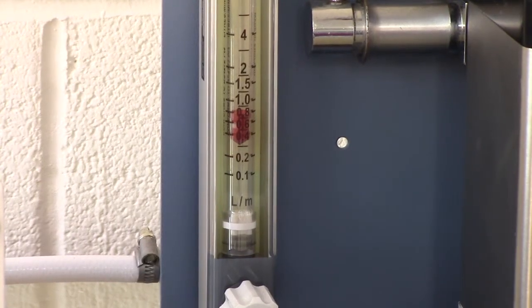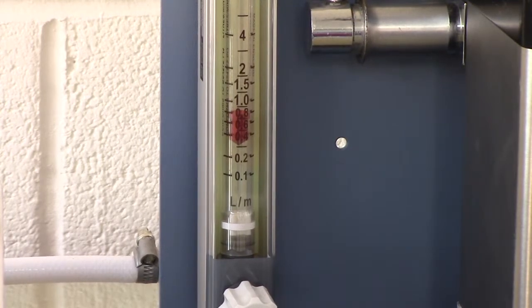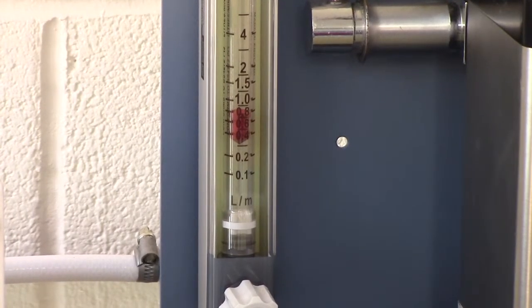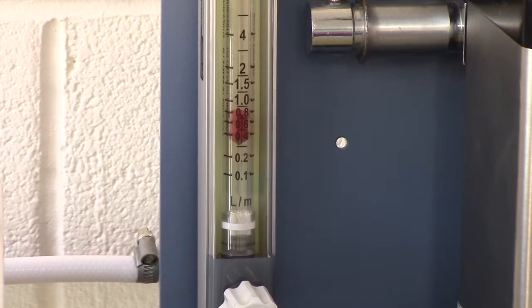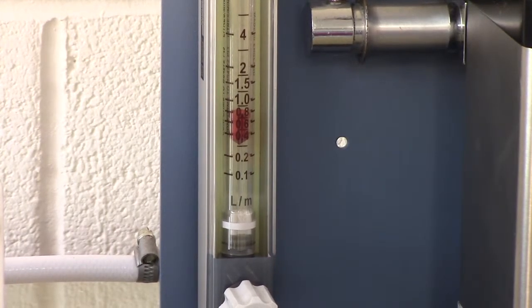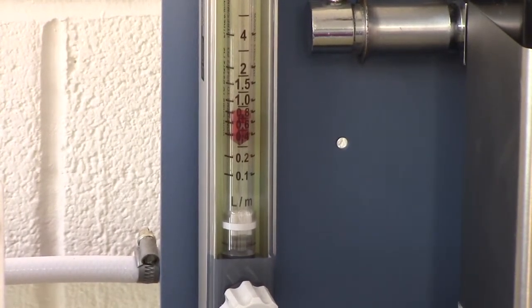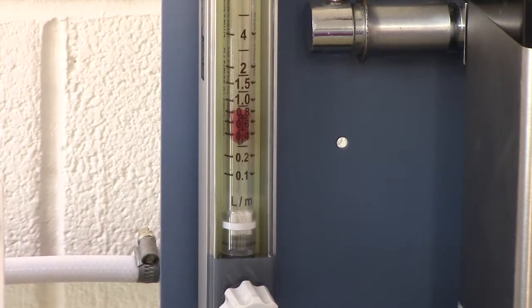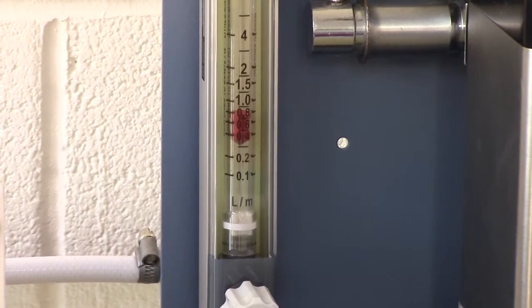In a circle configuration, the fresh gas flow only needs to meet the metabolic requirements of the animal. In practice, it tends to be set generally a bit higher than this, and in fact the settings should be the same as you normally use for a circle system in a spontaneously breathing animal.